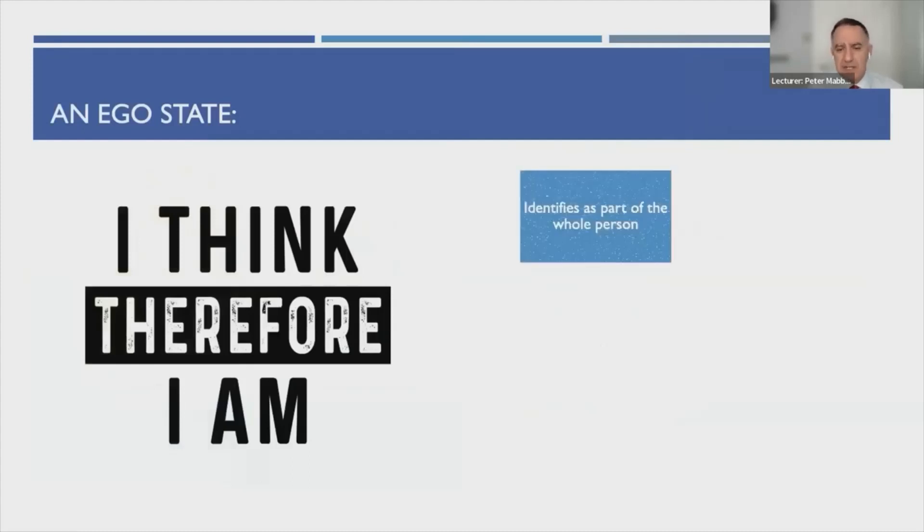An ego state identifies as part of the whole person. That's really important to remember. Even though it is a sub-personality, it is an identity in its own right. It knows it is part of the whole and will speak in the first person. When you talk to ego states, they identify as I.